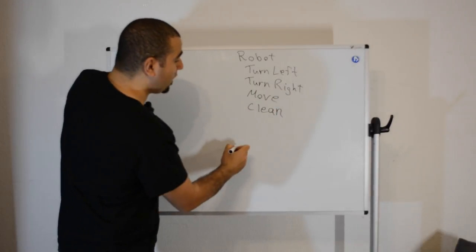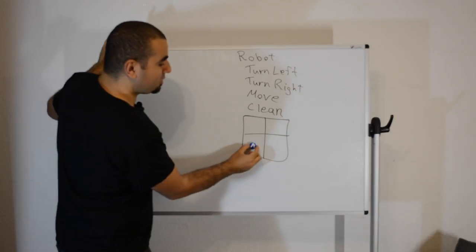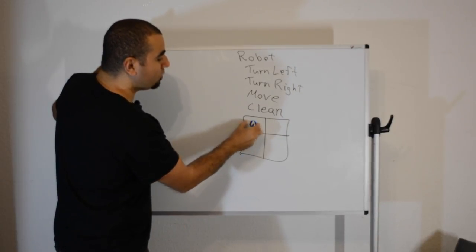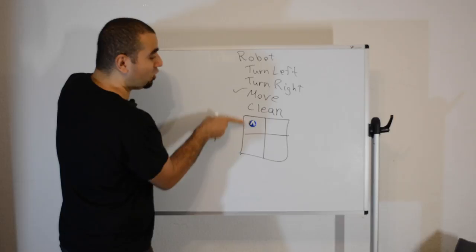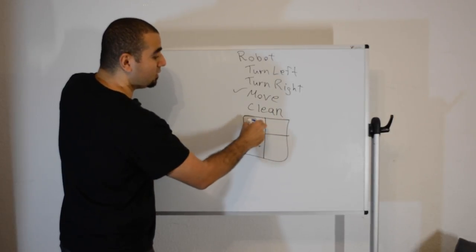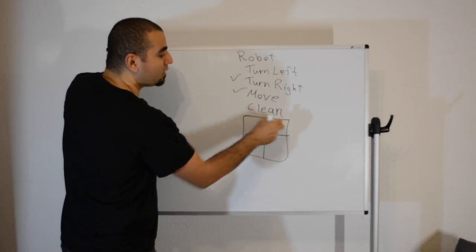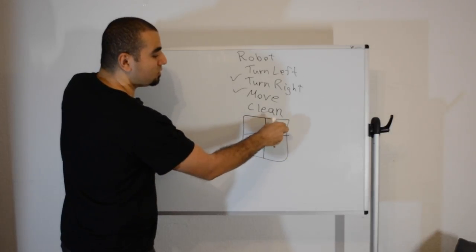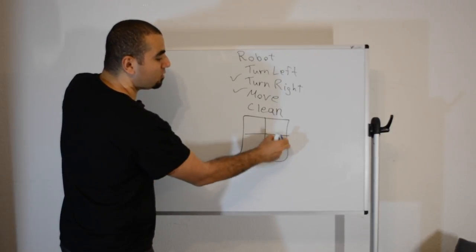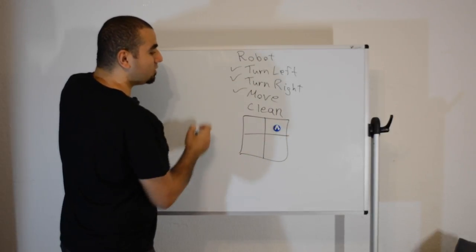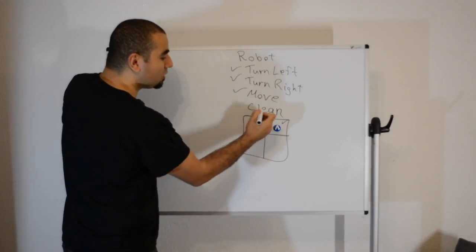For example, if we have a room like this square and our robot is here, the robot can move forward, or it can tell us it cannot move — for example when it's at the wall. It can turn right, then move again, or turn left and move forward. The base of this whole problem is cleaning: clean this square, clean this square, and so on.